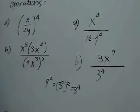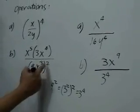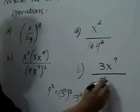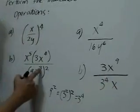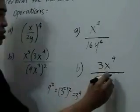3 to the 4th. And we have here x cubed squared, or x raised to the product of 3 and 2, which is 6.